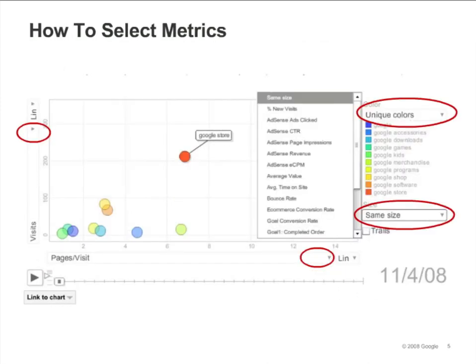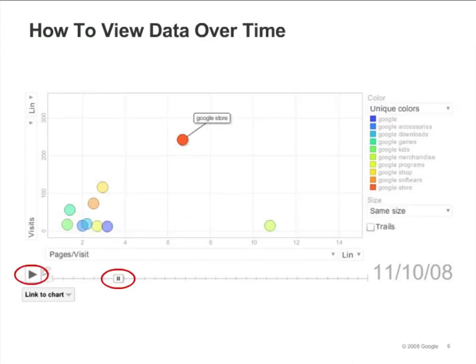Menus are available on each axis and for dot color and size so that you can select metrics. You can view the data over time by either dragging the slider or by pressing the play button. You can also change the scale of the X and Y axis to linear or logarithmic.